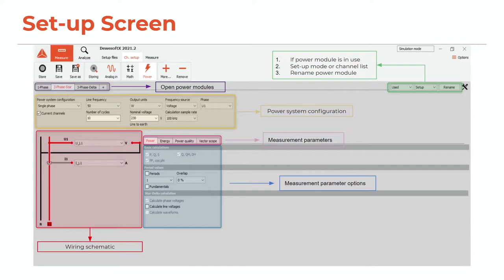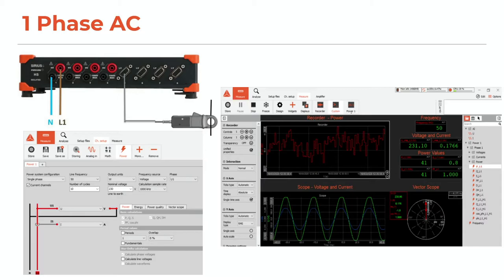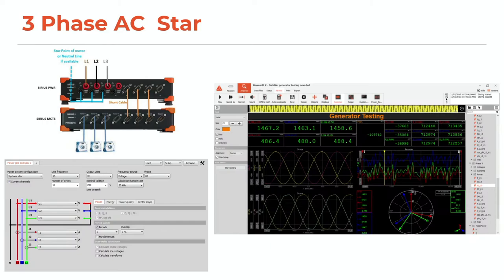Let's look at the measurement screen setups for a DC measurement. For DC, you connect your positive wire to the high voltage and the negative wire to the high voltage lag amplifier, stick on your current clamp, and you're ready to measure. Please pay attention: never calculate DC power using the one-phase power module — this would yield incorrect results. For a single-phase measurement it's very similar: you add your neutral line to the black low of the high voltage, and your line voltage to the red of the high voltage, add your current clamp, and you're ready to measure.